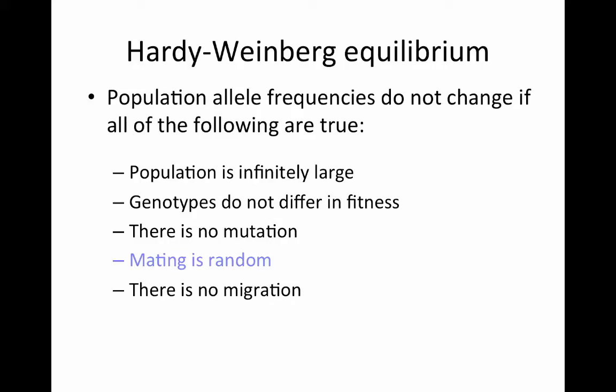So now let's turn our attention to non-random mating. Remember that for a population to be in Hardy-Weinberg equilibrium, for allele frequencies to remain the same from generation to generation, and to have genotype frequencies that can be predicted from the allele frequencies, you need to have random mating. But what if mating is not random?